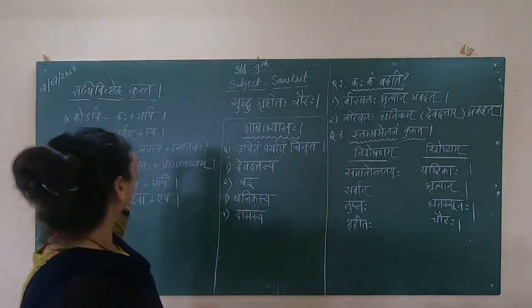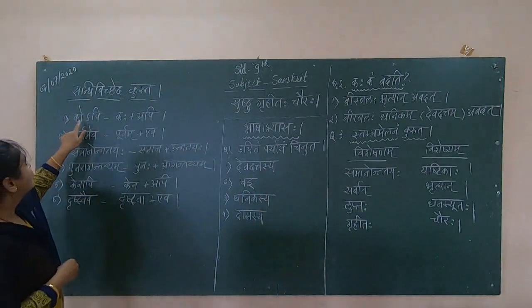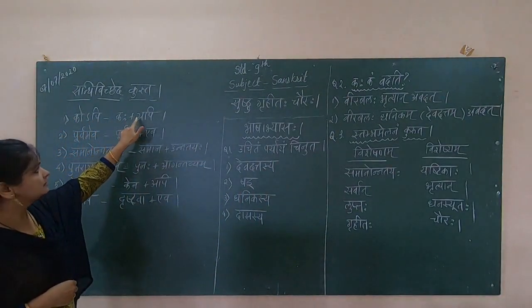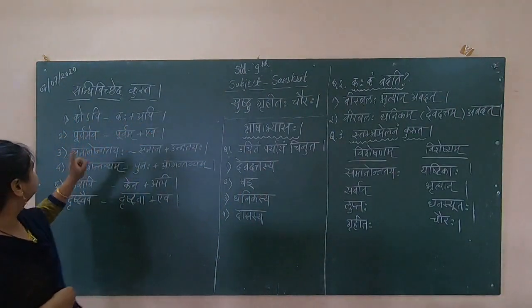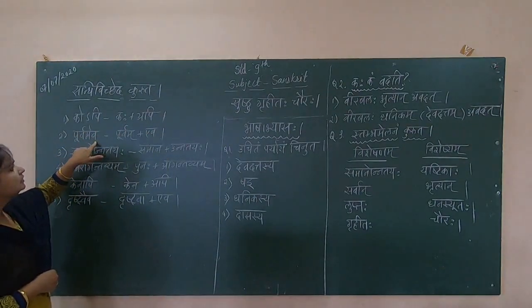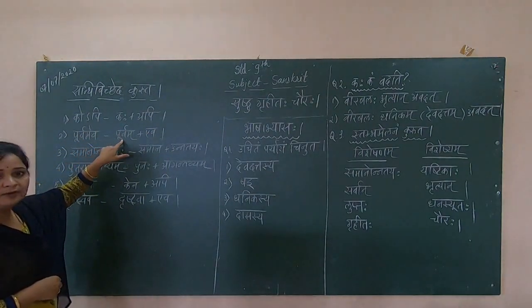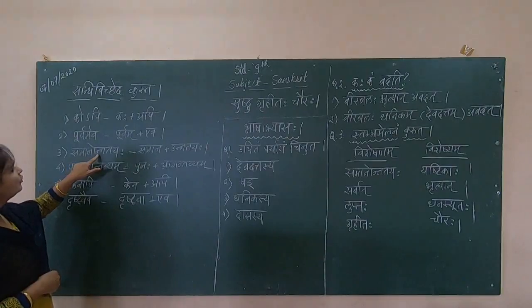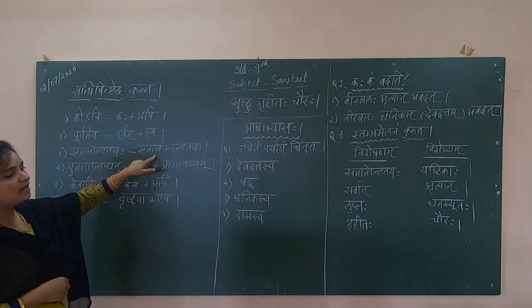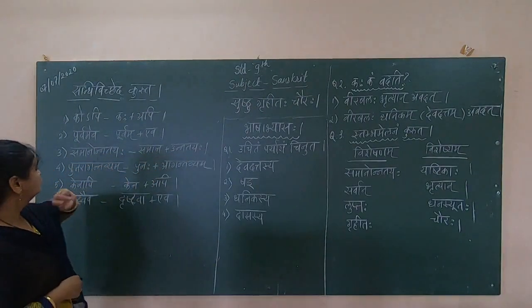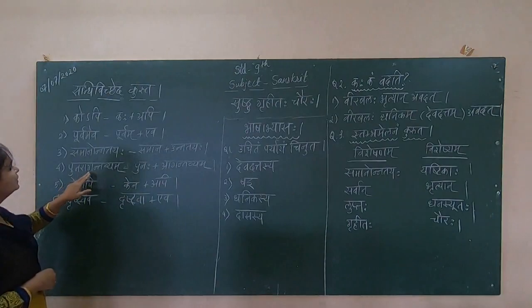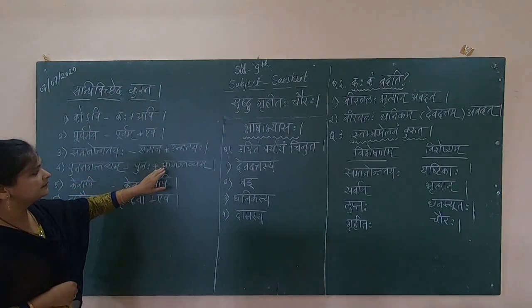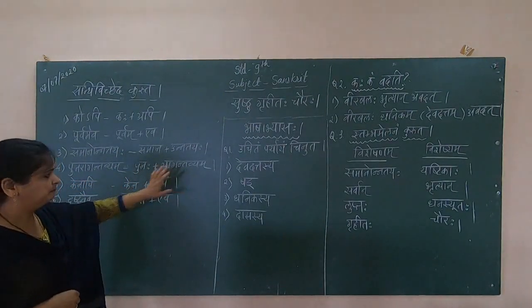First sandhi: ko avagraha p kaha. Plus api — purvam eva. Purvam plus eva — saman unnatayaha. Saman plus unnatayaha. Punar agantavyam.